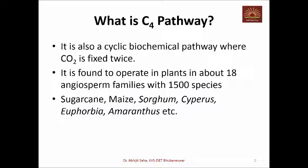Interestingly, C4 pathway is found to be operating in about 18 angiosperm families, out of which about 3 are monocots and 15 are dicot families, and in total about 1500 species where C4 plants are found. Some common examples are sugarcane, maize, sorghum, cypress, euphorbia, amaranthus, etc.